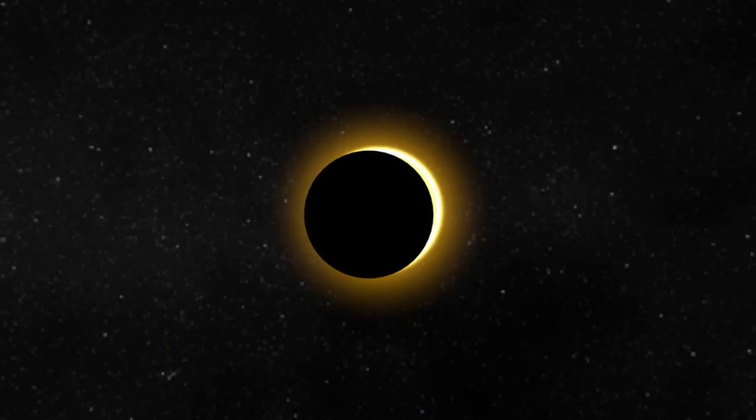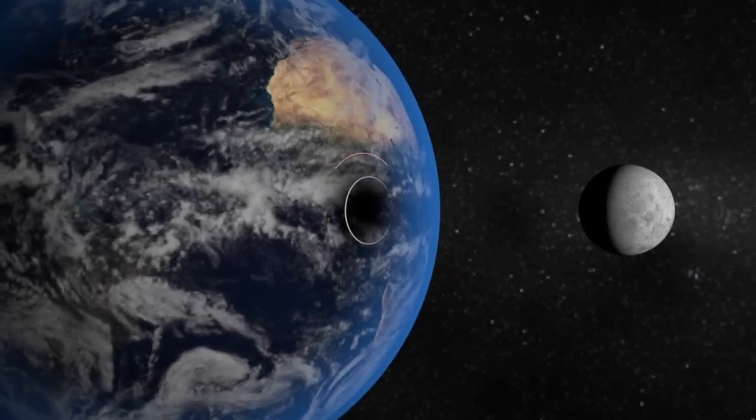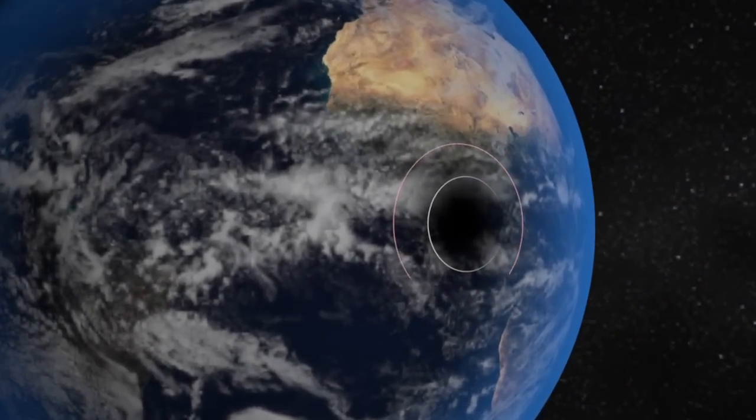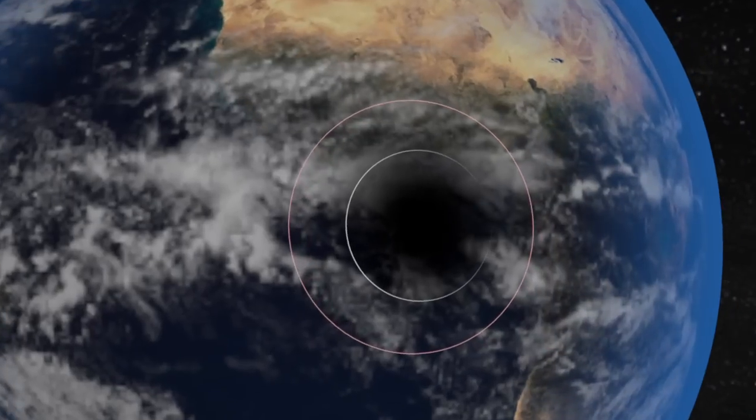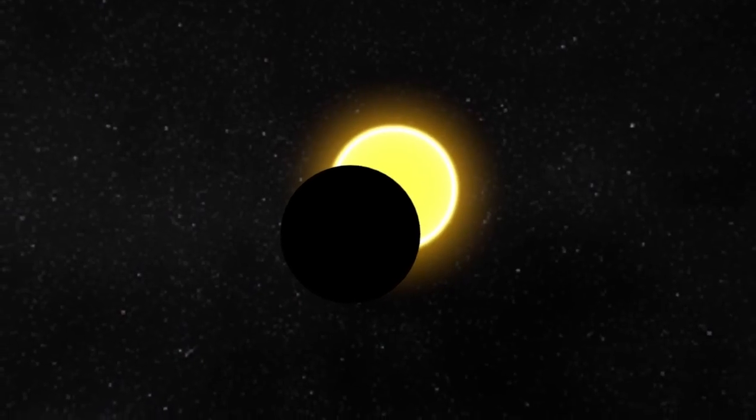As the moon moves in front of the sun, day becomes night for a few eerie moments. Around the path of totality, there's also an outer, fainter shadow known as the penumbra. From this area, it's possible to see a partial eclipse.